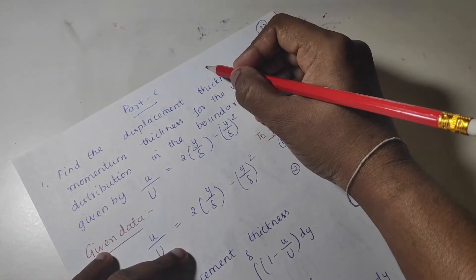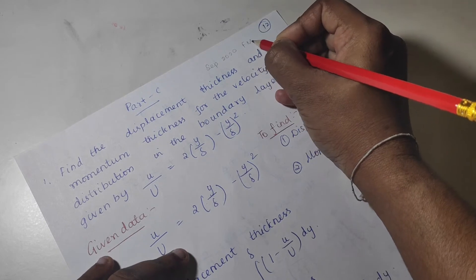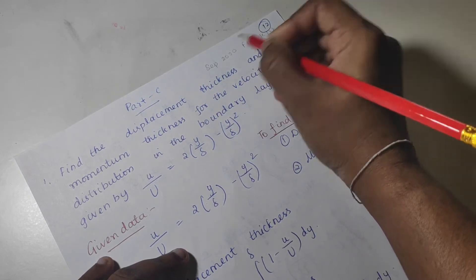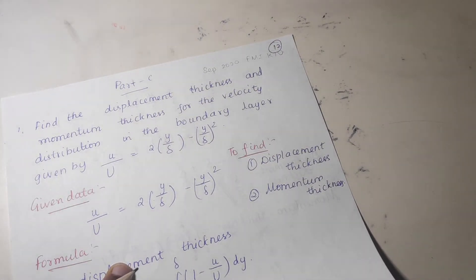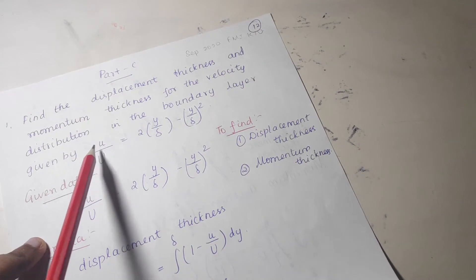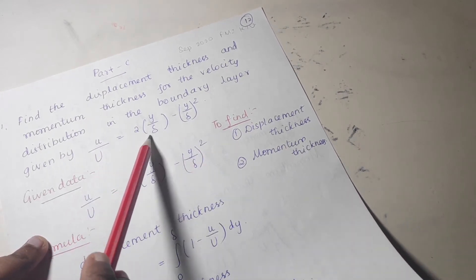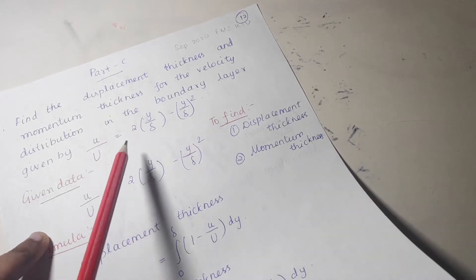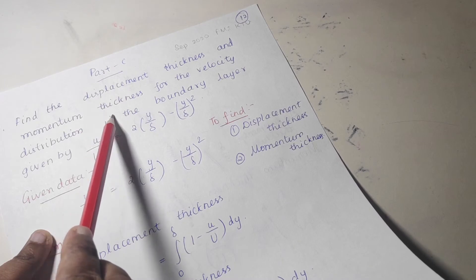This is September 2020, FM1 KTU Part C problems. Find the displacement thickness and momentum thickness for the velocity distribution in the boundary layer, given by small u divided by capital U equal to 2 into y by delta minus y by delta the whole square. You have to find the displacement thickness and the momentum thickness.